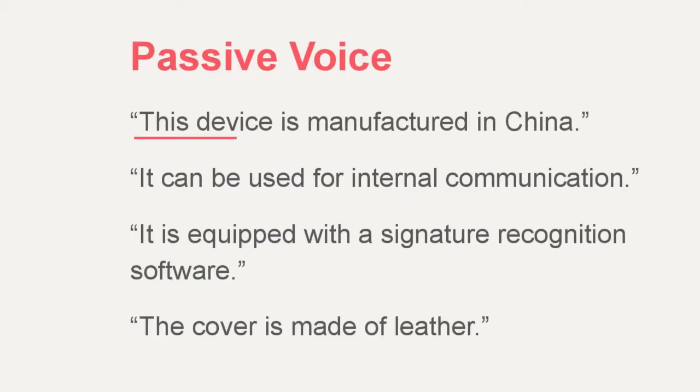For example: 'This device is manufactured in China.' Let's look at the structure — 'is manufactured' is passive voice. If you want to use a verb in passive voice, you should consider this structure: we use the verb 'to be' and the main verb is used in past participle, or the third form of the verb. Passive voice is used when we do not want to specify who is doing the action — we would like to focus on the action itself. Sometimes we do not know who performs the action, and that's why passive voice is necessary.